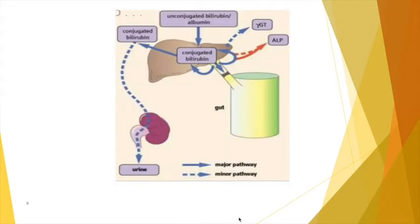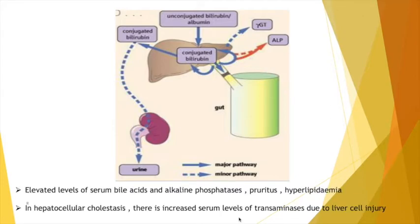A pictorial representation shows that from the liver to the gut the flow is blocked, so conjugated bilirubin gets absorbed into the bloodstream, causing conjugated hyperbilirubinemia, and passes through urine causing bilirubinuria. There is also an elevated level of serum bile acids and alkaline phosphatase, which can cause pruritus — that is, itching — and hyperlipidemia due to increased cholesterol. In hepatocellular cholestasis, there are also increased serum levels of transaminases due to liver cell injury.